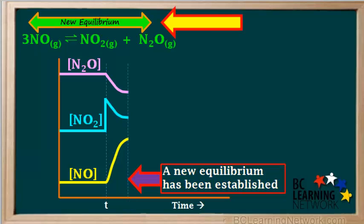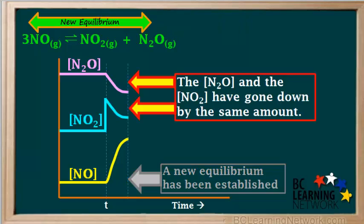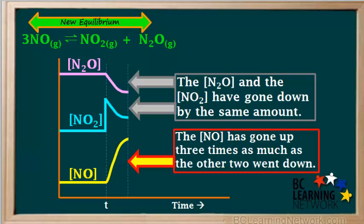The shift to the left has now been completed, and the reaction has reached a new equilibrium, as shown above the equation at the top of the video. Looking at the graph, we can see that during the shift, N₂O and NO₂ have gone down by the same amount, because they both have a coefficient of 1 in the balanced equation. We can also see that the concentration of NO has gone up three times as much as the concentrations of N₂O and NO₂ have gone down, due to the 3-to-1 coefficient ratio of NO to NO₂ in the balanced equation.